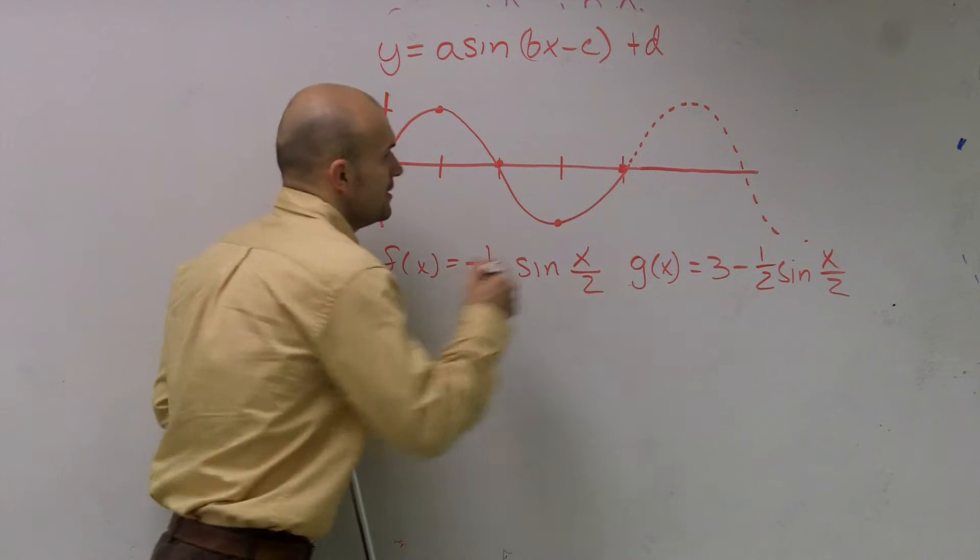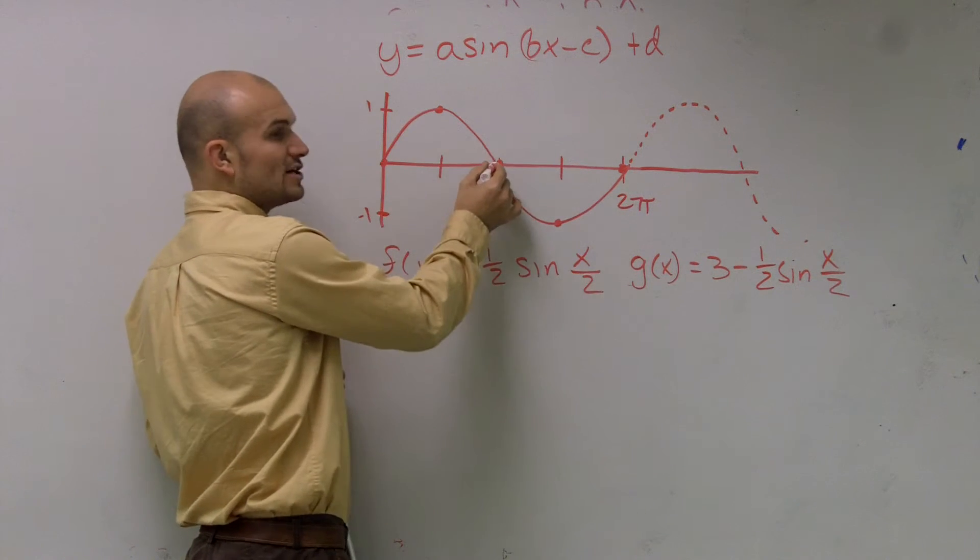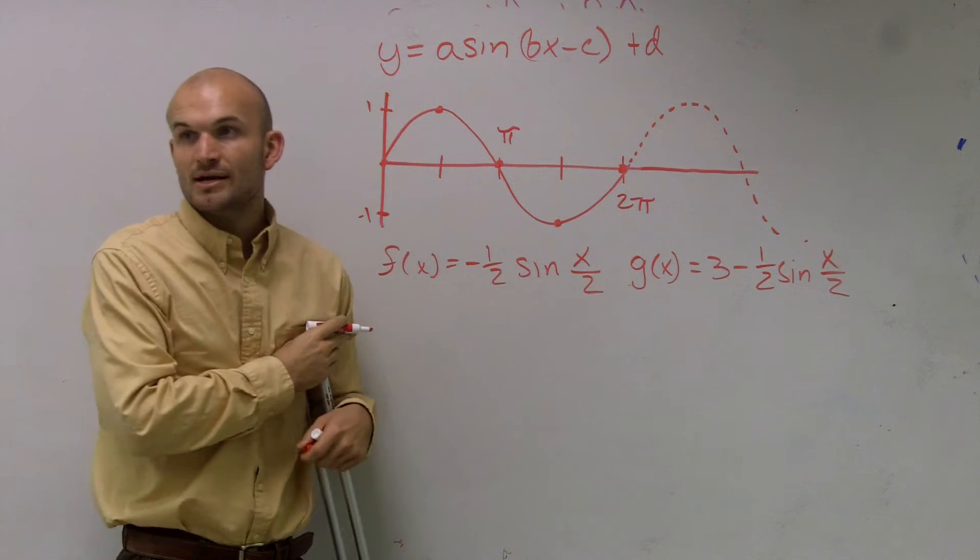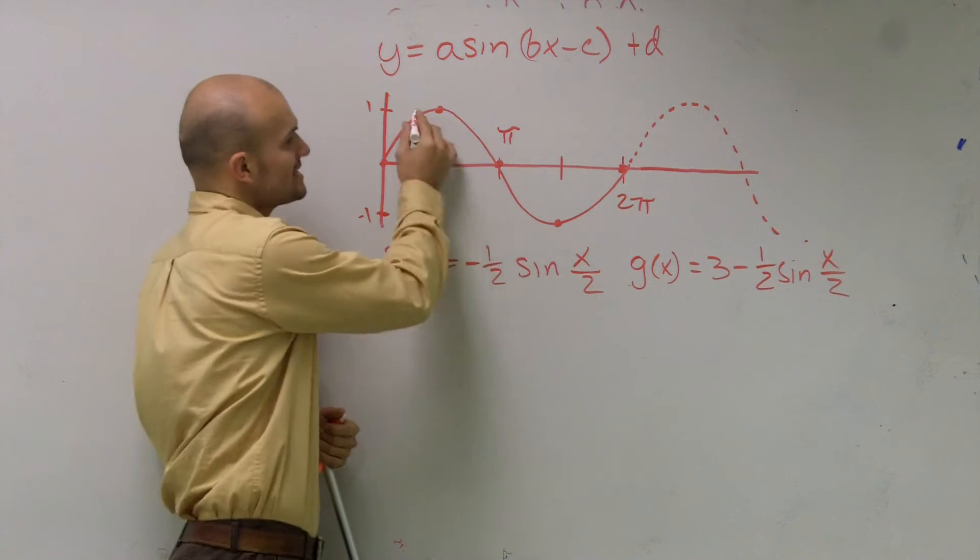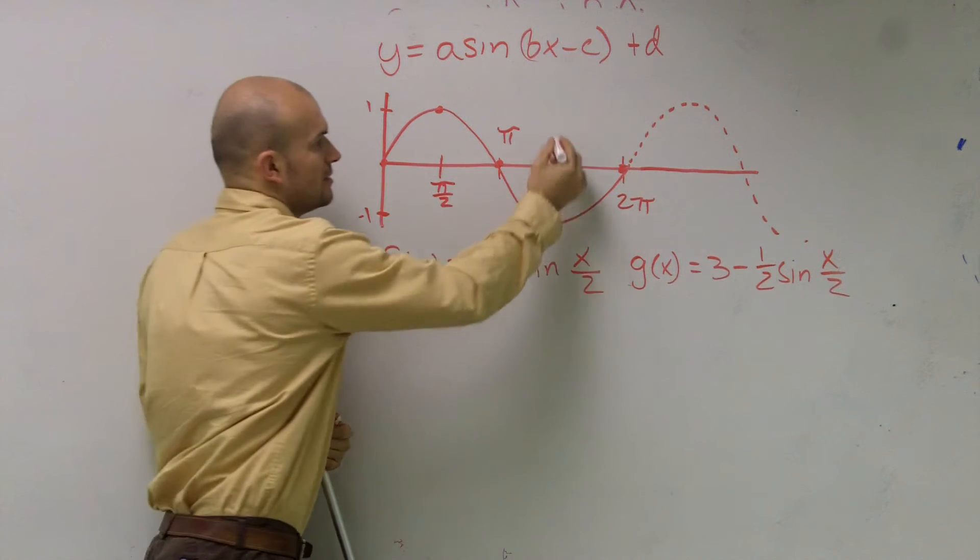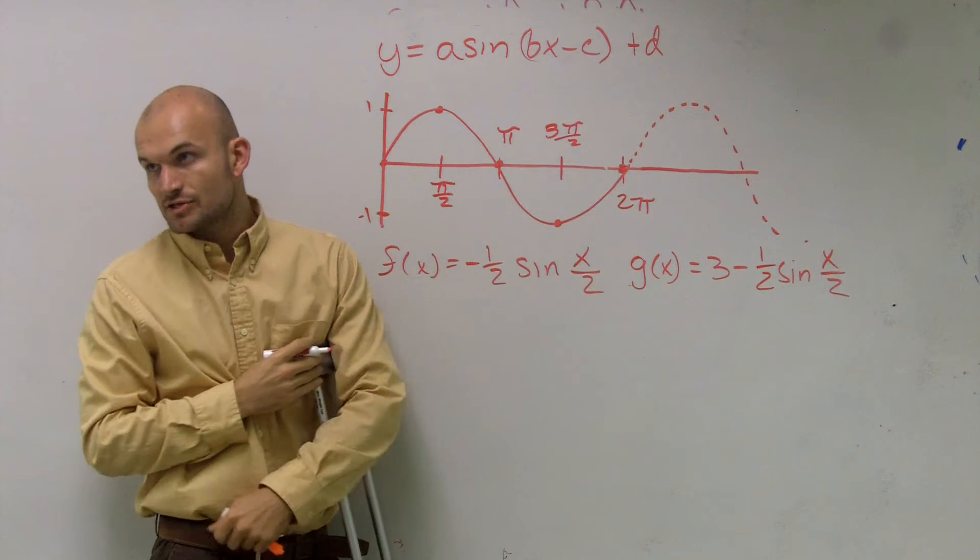Well, for the major graph, remember this ends at 2 pi. Where it intersects is our major point, which is at pi. And then there's a maximum and a minimum, which runs to our amplitude of 1. So the maximum point occurs at pi over 2 and the minimum occurs at 3 pi over 2.